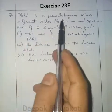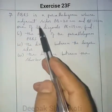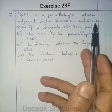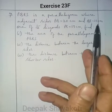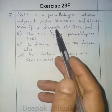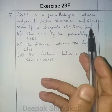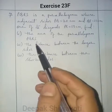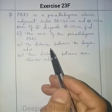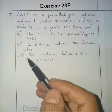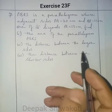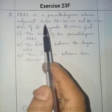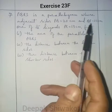PQRS is a parallelogram whose adjacent sides PQ equals 20 cm and QR equals 21 cm. One of its diagonals PR equals 13 cm. Find: number 1, the area of the parallelogram PQRS; number 2, the distance between the longer sides; and number 3, the distance between the shorter sides. Let us draw the parallelogram PQRS according to the given measurements.